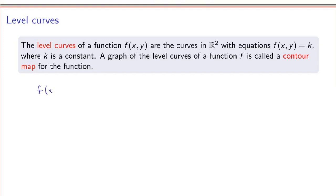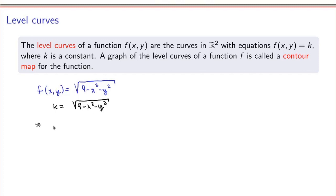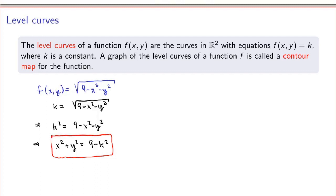As an example, I'll modify the function slightly to make the level curves more interesting: f(x, y) equals the square root of 9 minus x squared minus y squared. To draw level curves, I set the function equal to k and square both sides: k squared equals 9 minus x squared minus y squared, which gives x squared plus y squared equals 9 minus k squared. So the level curves are circles centered at the origin with radius equal to the square root of 9 minus k squared.